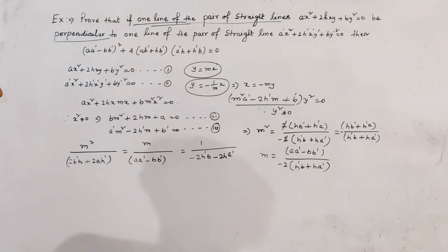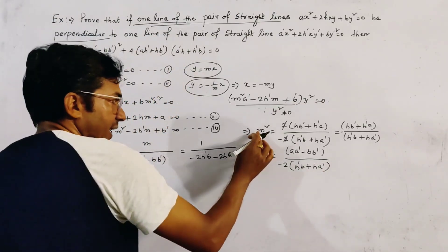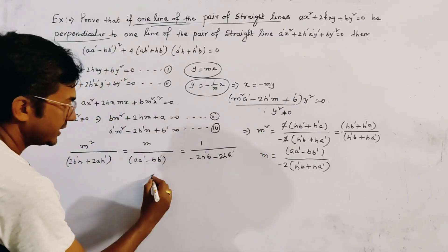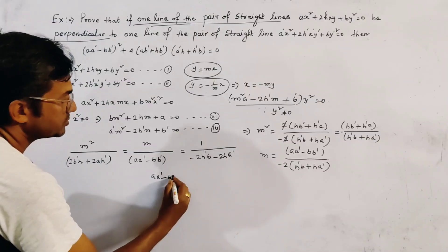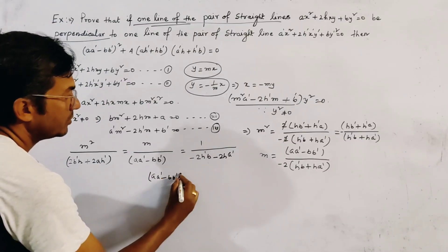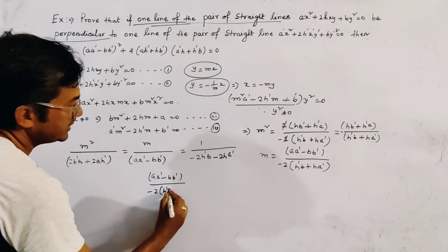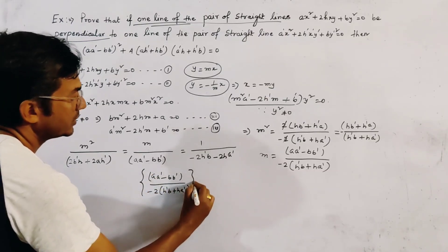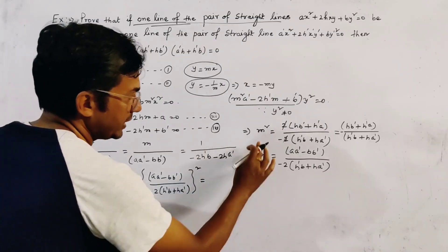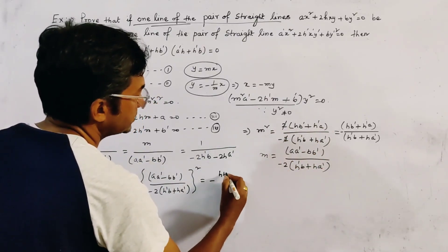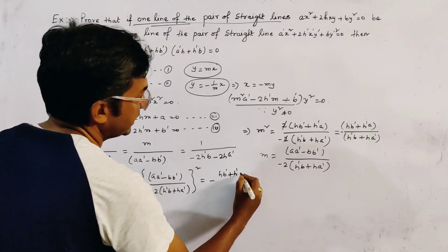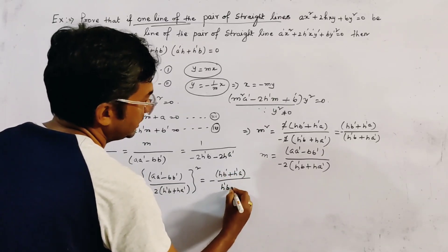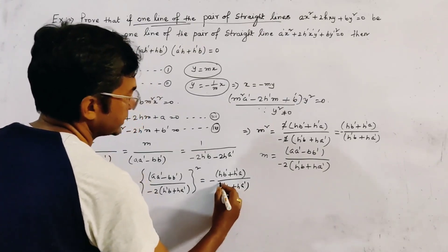We get m² equal to (aa' - bb') / [-2(h'b + ha')]². And m is given by (-hb' + h'a) / (h'b + ha'). Setting m² equal to the square of m, we get (aa' - bb') / [-2(h'b + ha')]² = [(-hb' + h'a) / (h'b + ha')]².